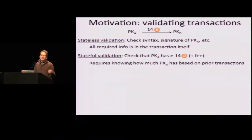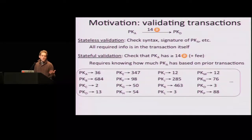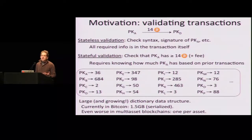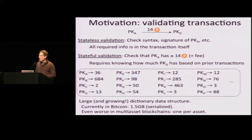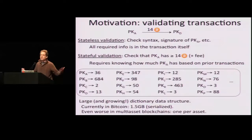That part is stateful — you have to know how much Alice has based on prior transactions. Maybe you know that the public key of Alice actually has 36 bitcoins, and that's good enough. But if you're really trying to validate transactions, you're going to have to have this key-value store of public keys mapped to the current amounts they have, and look things up in that store to validate transactions. The problem with this dictionary data structure is that it's big and it's growing — today it's about one and a half gigs in Bitcoin if you serialize it. Things get worse if you have a blockchain for many assets, because then you need one key-value store for every asset.